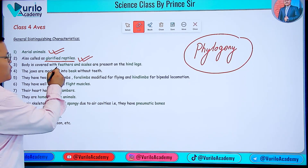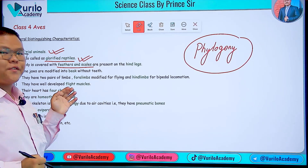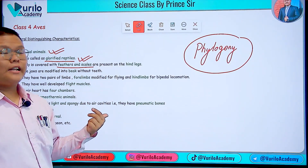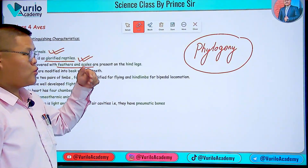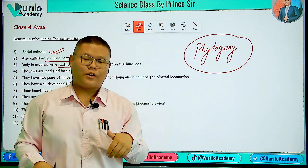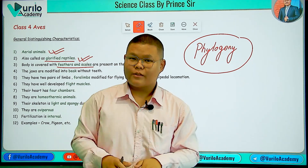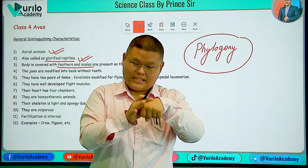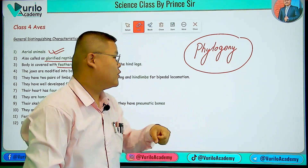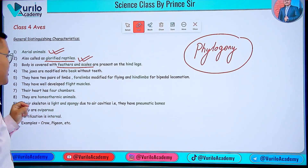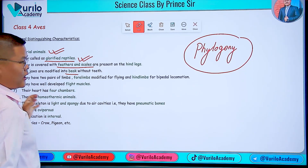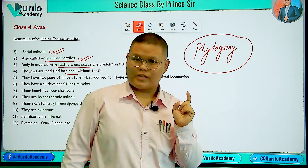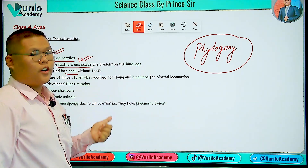The body is covered with feathers and scales. Feathers cover the body, and scales are present around the legs and feet — similar to the scales seen in snakes and chickens. The jaws are modified into a beak without teeth. Your jaw has teeth, but birds have a beak instead of teeth.